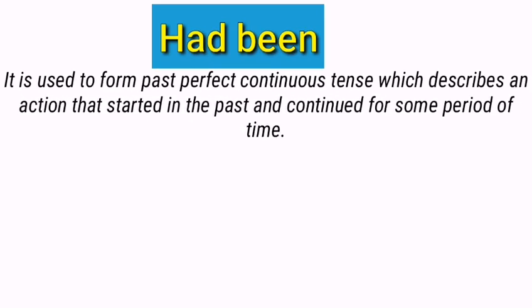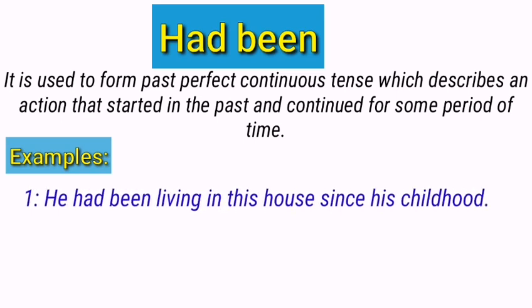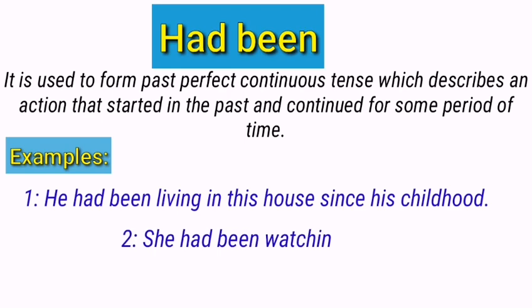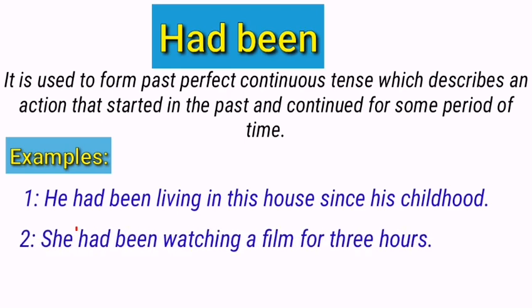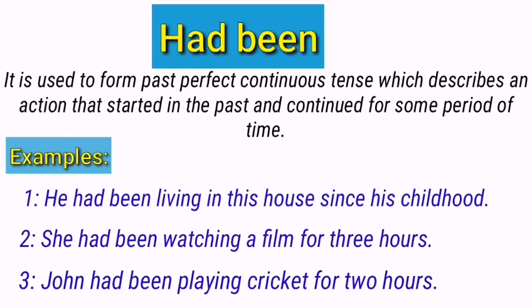Had been. It is used to form past perfect continuous tense, which describes an action that started in the past and continued for some period of time. 'Had been' is used with all subjects — he, she, plural nouns, etc. For example: He had been living in this house since his childhood. 'Had been' is used to form past perfect progressive tense, showing the act of living started in the past and continued for a certain period. She had been watching a film for three hours. John had been playing cricket for two hours — both past perfect continuous.